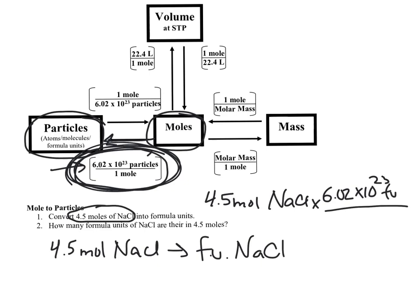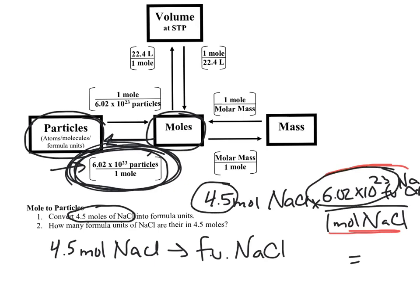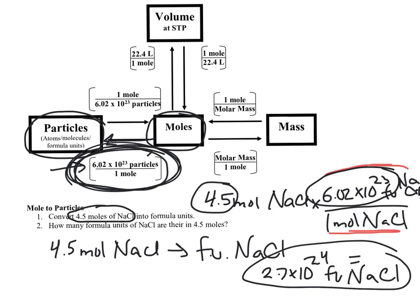That's formula units of sodium chloride on top, and 1 mole of sodium chloride on the bottom — meaning for every 1 mole of NaCl, there are 6.02×10²³ particles. The calculation is 4.5 times 6.02×10²³ divided by 1, giving approximately 2.7×10²⁴ formula units of NaCl. It's a huge number, but it should be — 4.5 moles times Avogadro's number is still enormous.